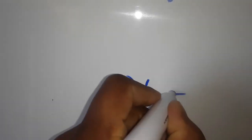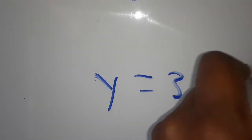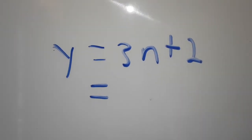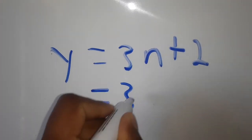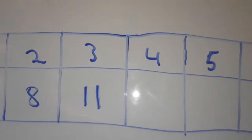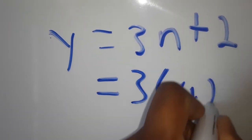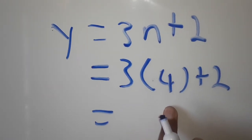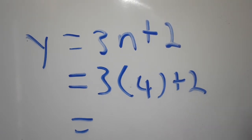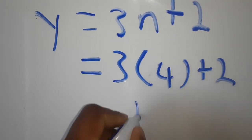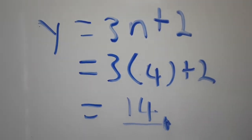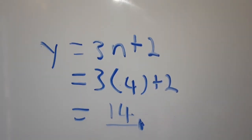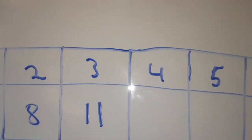y is equal to 3n plus 2, which is equal to 3. In place of n we put 4. So 3 times 4 gives us 12, plus 2 gives us 14. So we have 14 as our answer. This is how we do the input-output method.